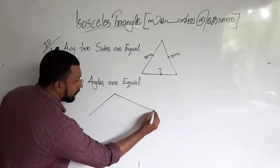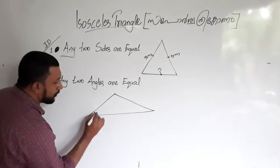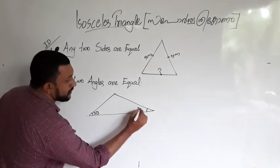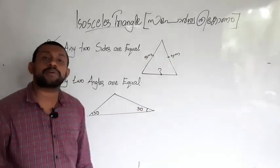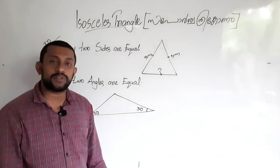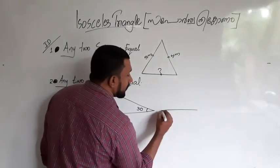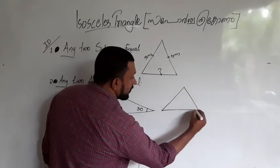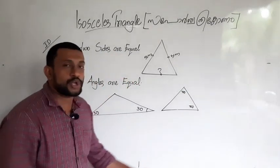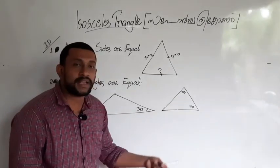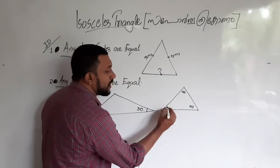To clarify: one side is equal in some triangles, three sides are equal in others, and in the isosceles triangle, any two sides are equal. This is what distinguishes it.